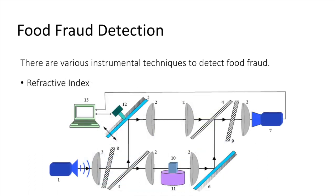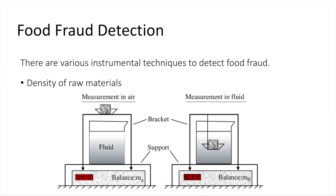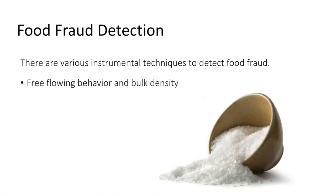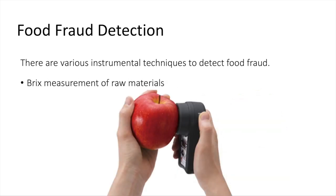Refractive index is another tool — every raw material has a specific refractive index representative of that particular commodity. Density is also representative of a particular food commodity, and within a tolerance range can be used to determine authenticity. Free-flowing behavior and bulk density are also representative of a particular raw material and can help estimate product authenticity. Brix measurement is another method, as particular commodities have a specific range of Brix values representative of that commodity.